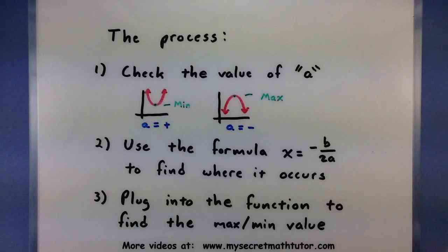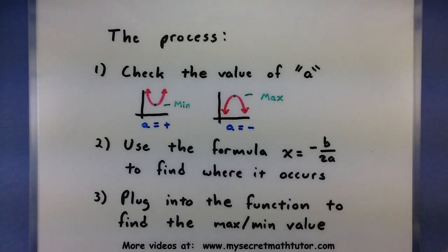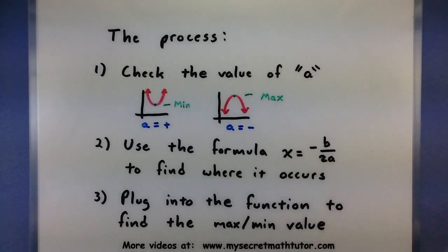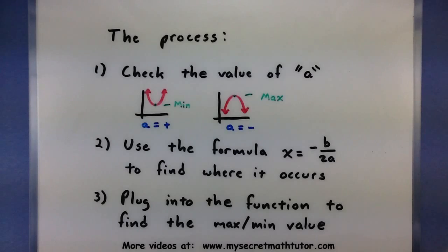In either case, we're essentially just looking for the vertex. As soon as we know which direction the parabola is facing, we simply use the vertex formula to figure out where that max or min is located. We use x equals negative b over 2a. Once we have that x value, we plug it into the function and it tells us what the value of the max or min actually is.